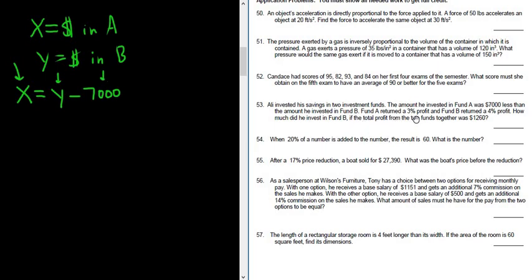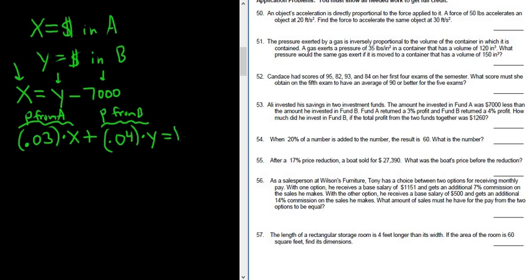Fund A returned 3% and Fund B returned 4%. The total profit was $1,260, so we can get an equation for that. The total profit from A is 3% of the amount invested in A, plus the total profit from B. B returns 4%, so that's 4% of the amount invested in B. So the profit from A plus the profit from B equals the total profit earned, which is $1,260.